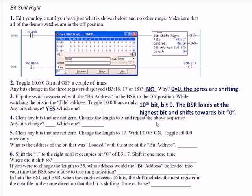Clear any bits that are not 0 in B3:16, 17, and 18. Change the length to 5 and repeat. The fifth bit of a length of 5 is bit 4, so bit 4 changes. Then clear again, change the length to 17, turn Input 5 on, and toggle Input 0 once only. The bit loaded with the state of the bit address is B3:18 bit 0. So with a length of 17, whether using BSL or BSR, you're working on the same group of 17 bits — the only difference is you load at the highest bit instead of the lowest and shift in the opposite direction.